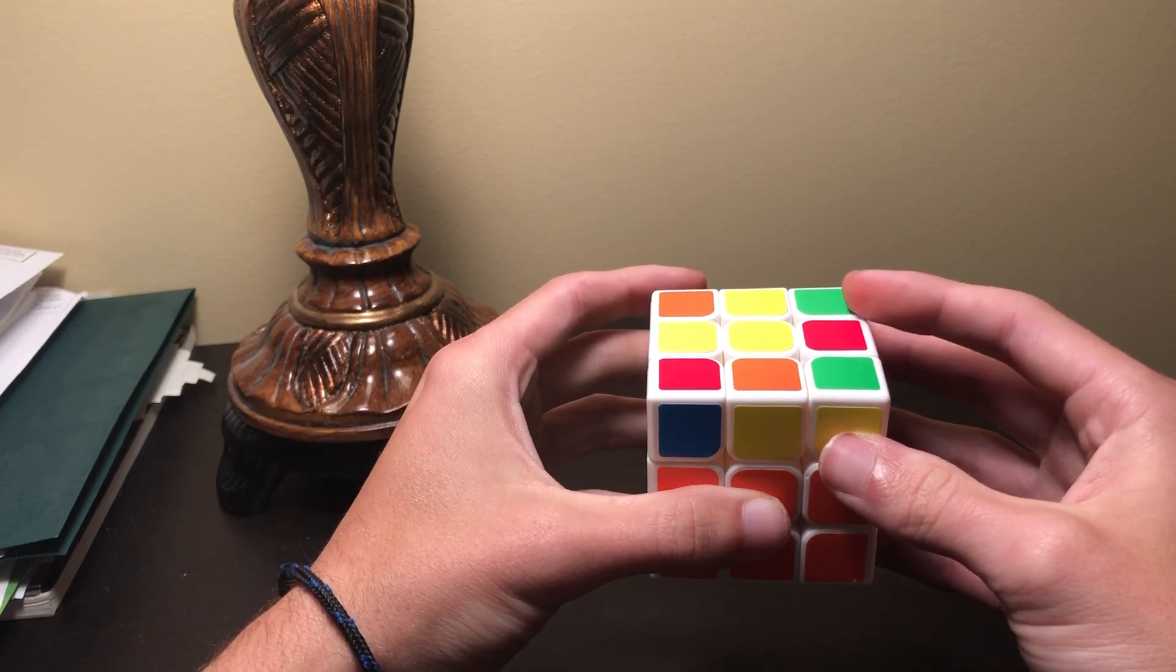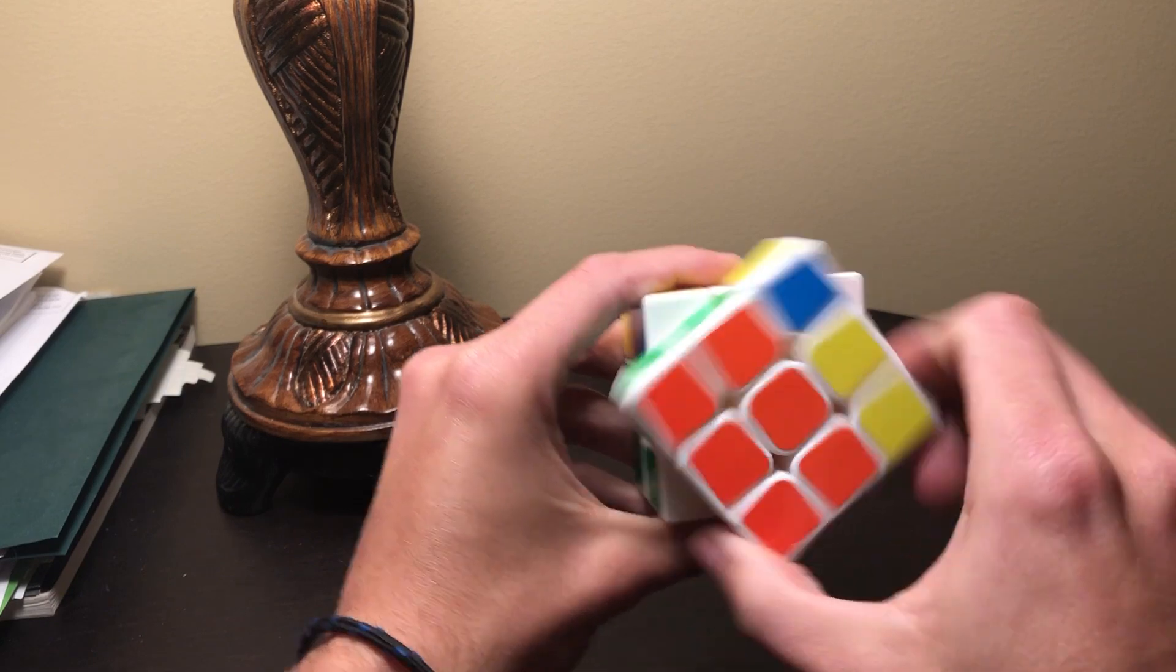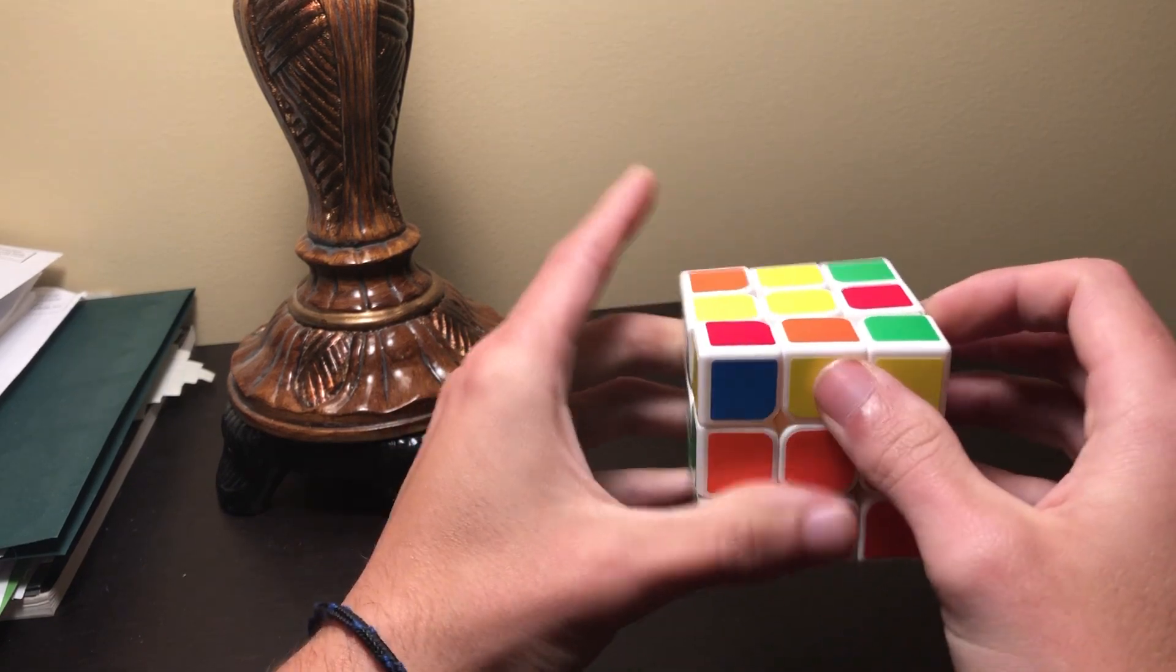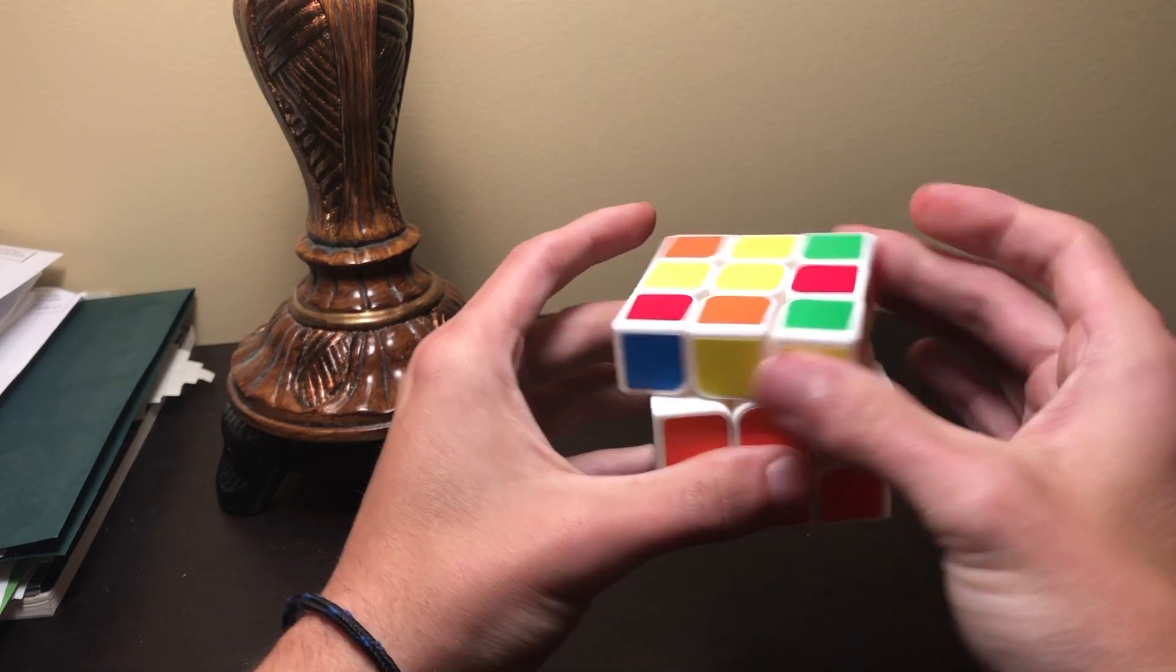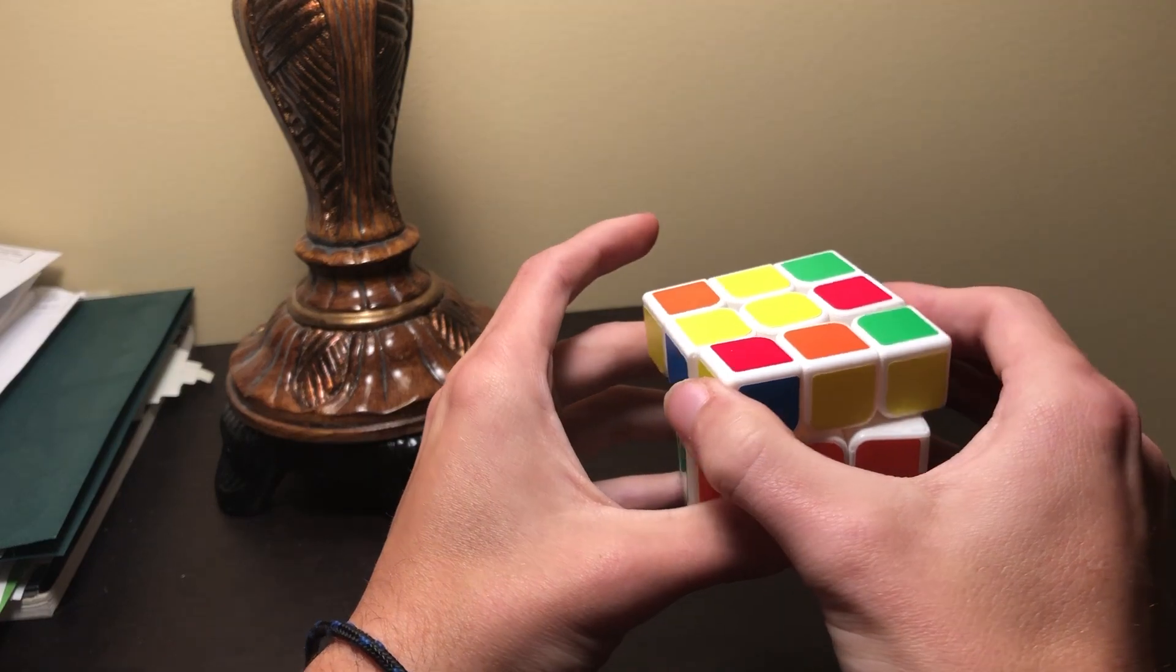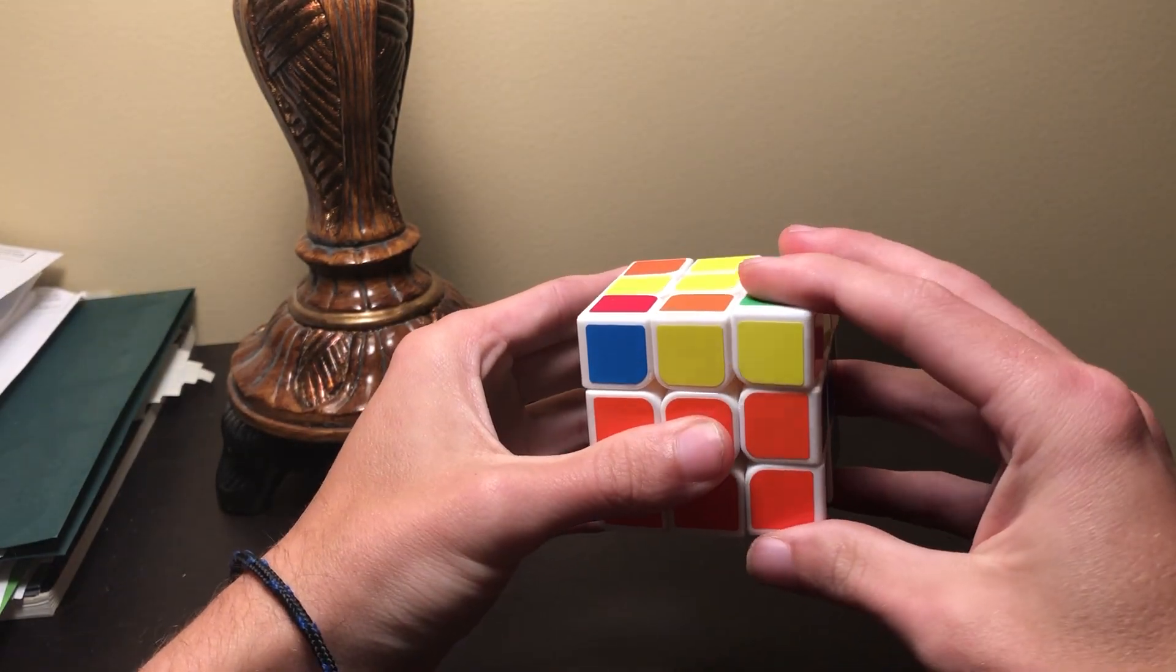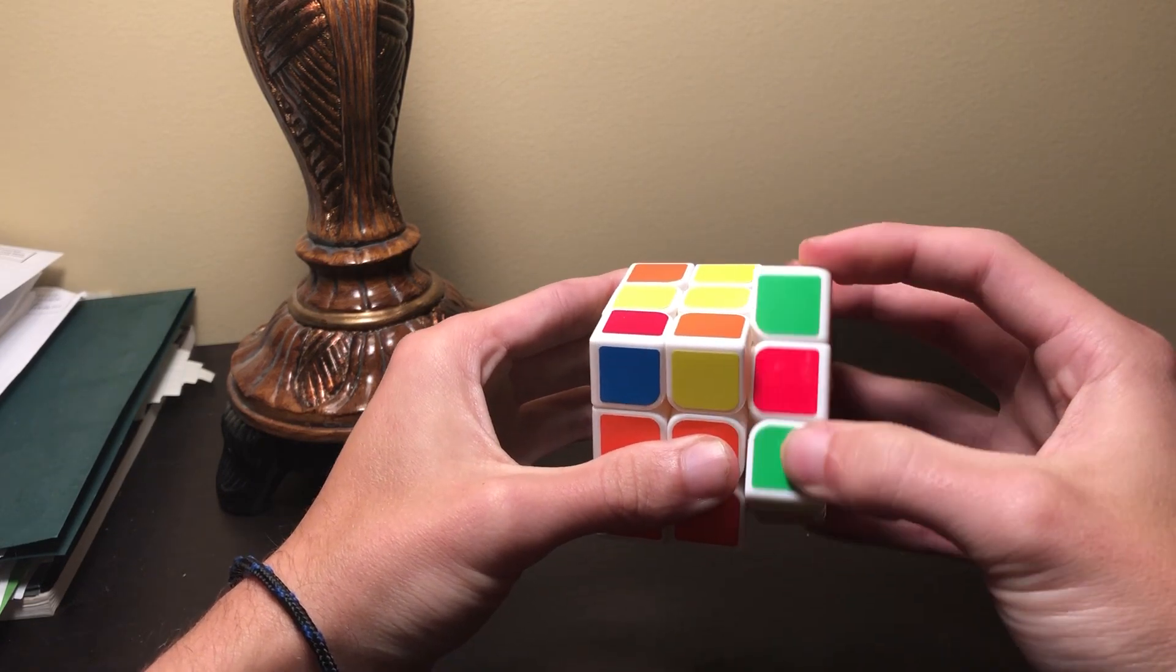So let's go over what we have so far. Front. This is a front invert turn. Top. Here we have a top invert turn. Right. And right invert would be this way.